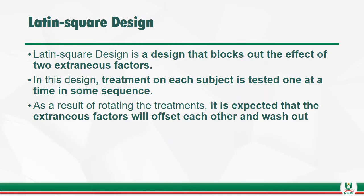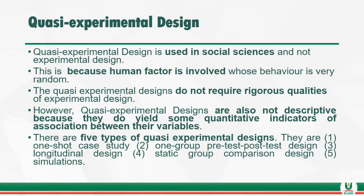Latin square design is a design that blocks out the effect of two extraneous factors or variables. In this design, treatment on one subject is tested one at a time in some sequence. As a result of rotating the treatment, it is expected that the extraneous variables will offset each other. Quasi-experimental design, or semi-experimental design, is used in social sciences and not in pure experimental design, because human factors involved have very random behavior. Quasi-experimental designs do not require rigorous experimental conditions.